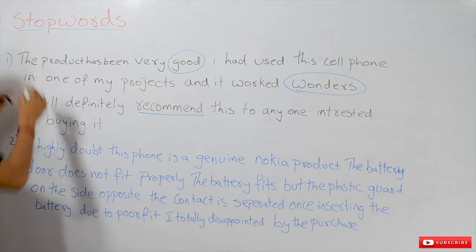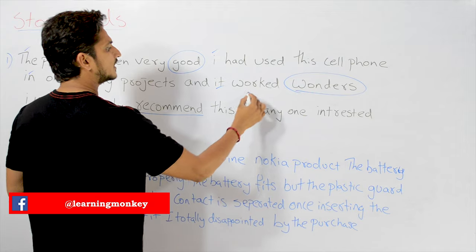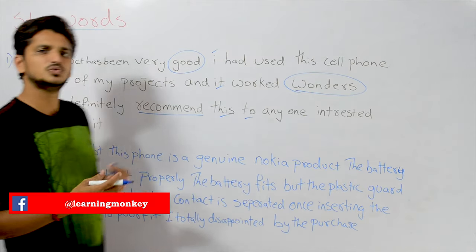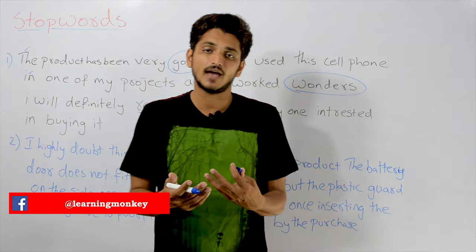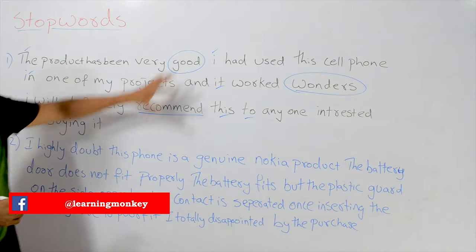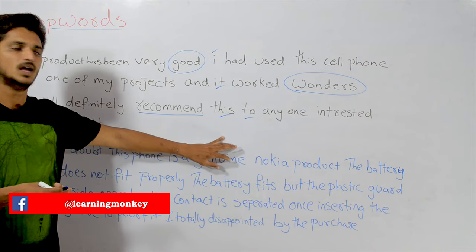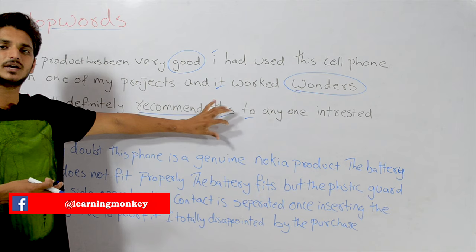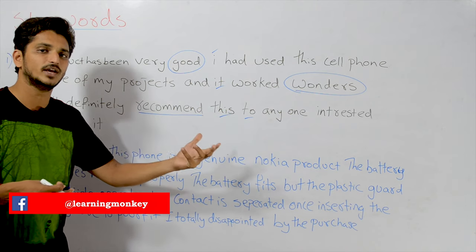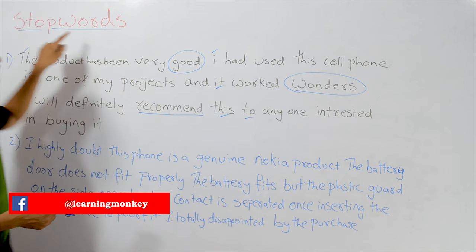Coming to the remaining words — 'the', 'in', 'I', 'it', 'this', 'to' — all these words are useless because even in a negative feedback, these are commonly used words for framing sentences. These words can be eliminated because we don't need them for analyzing whether a feedback is positive or negative. These words come under stop words.